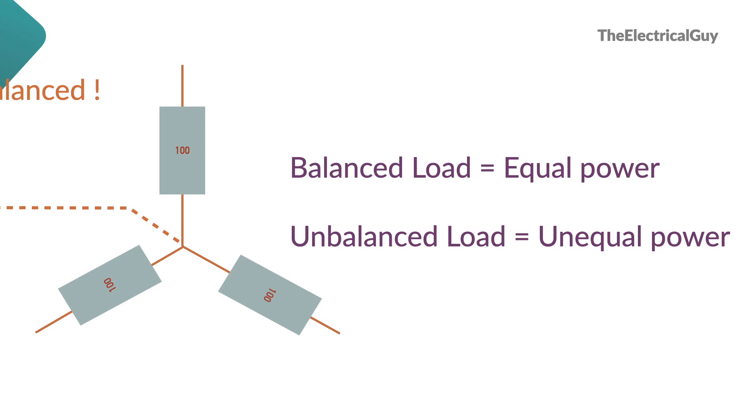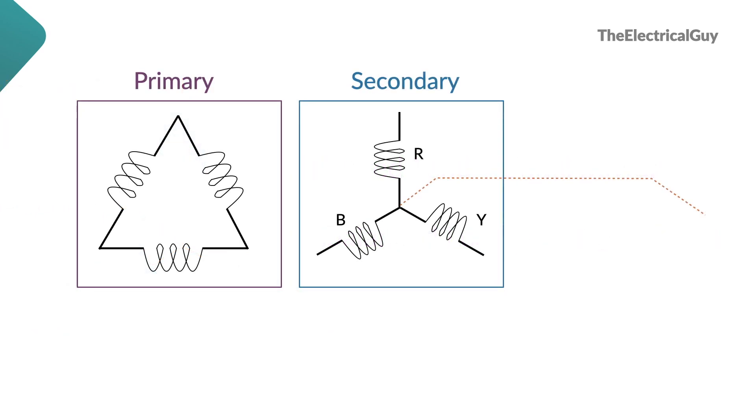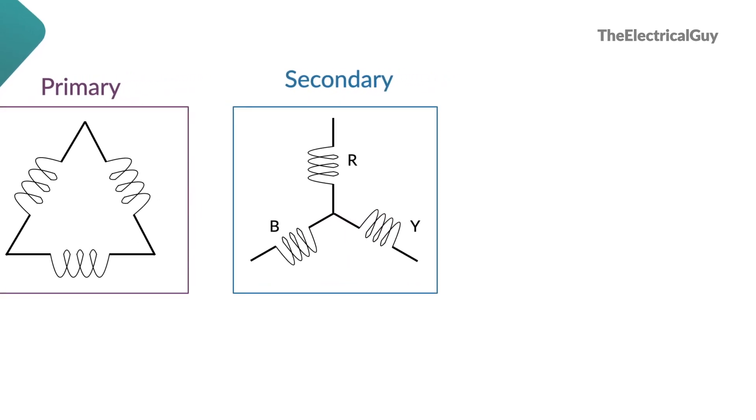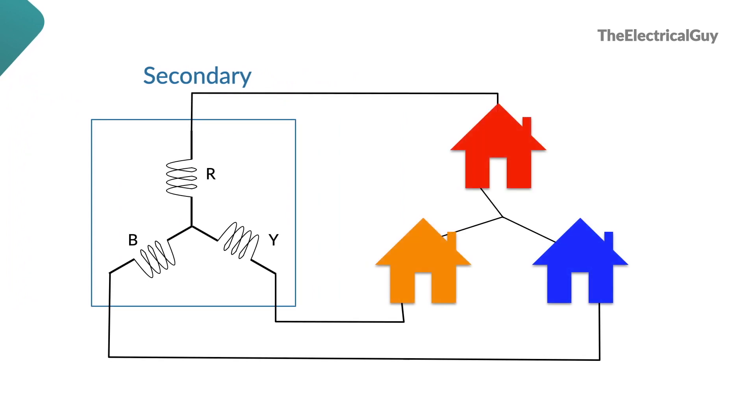Now let's go to our distribution transformer. This is connected in delta-star manner, meaning primary or incoming is connected in delta connection and secondary or outgoing is connected in star connection. This common point right here is our neutral point. This here is our load, which are three different houses. Of course, power consumption of these loads will be different.